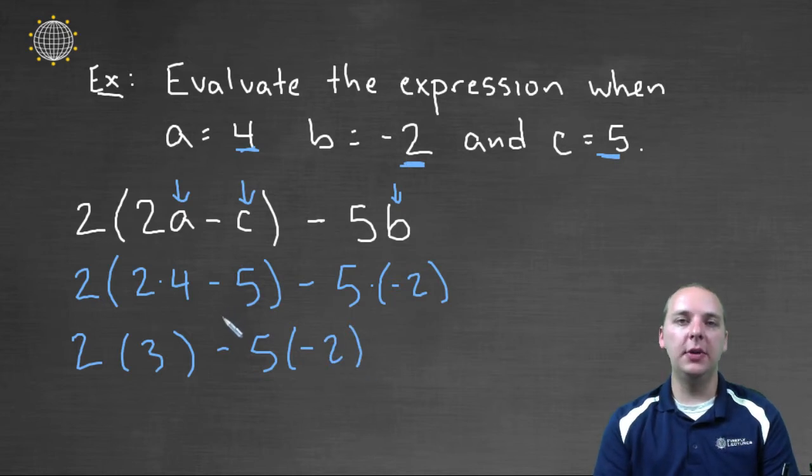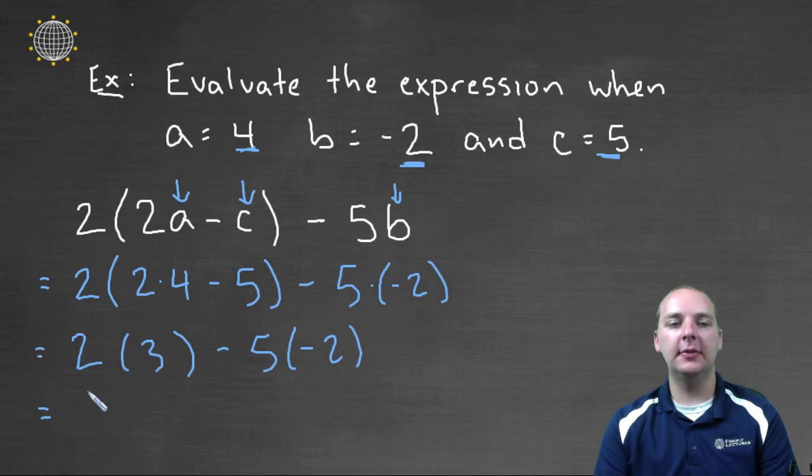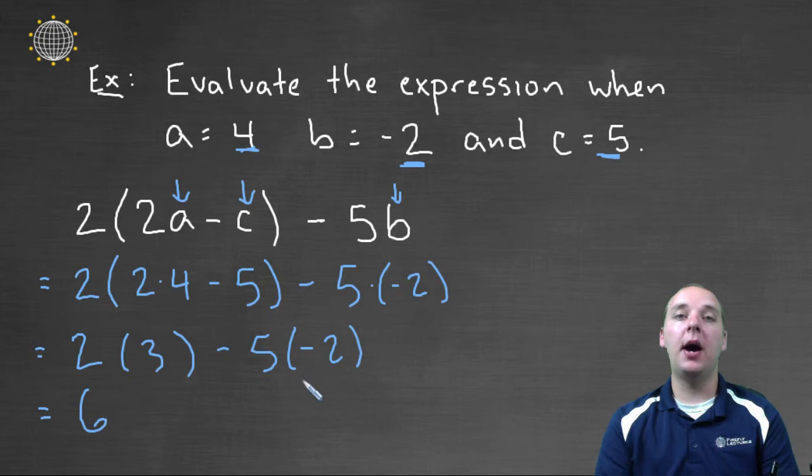Okay, parentheses have been done, now how about multiplication? 2 times 3 is 6. Negative 5 times negative 2 makes positive 10. So I'll have plus 10 instead of minus negative 10.